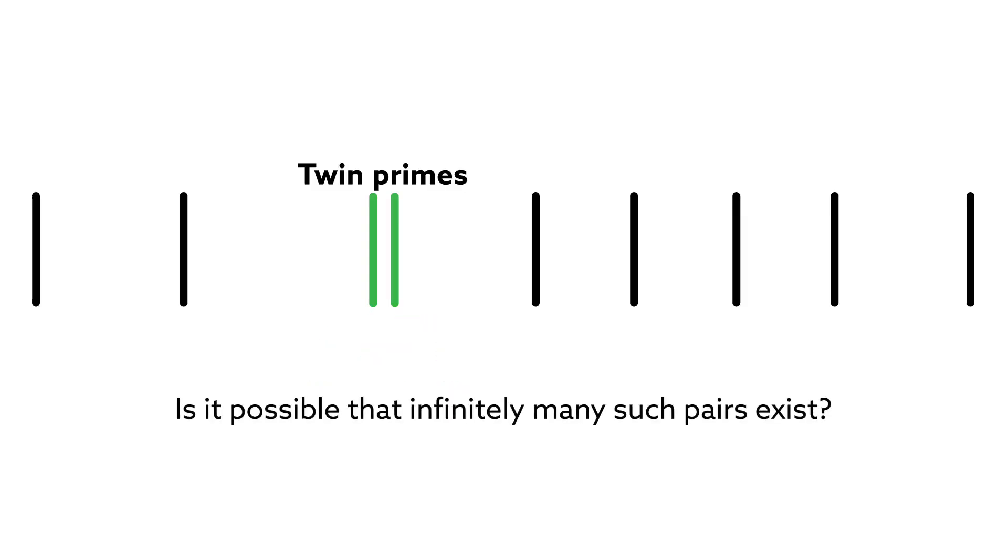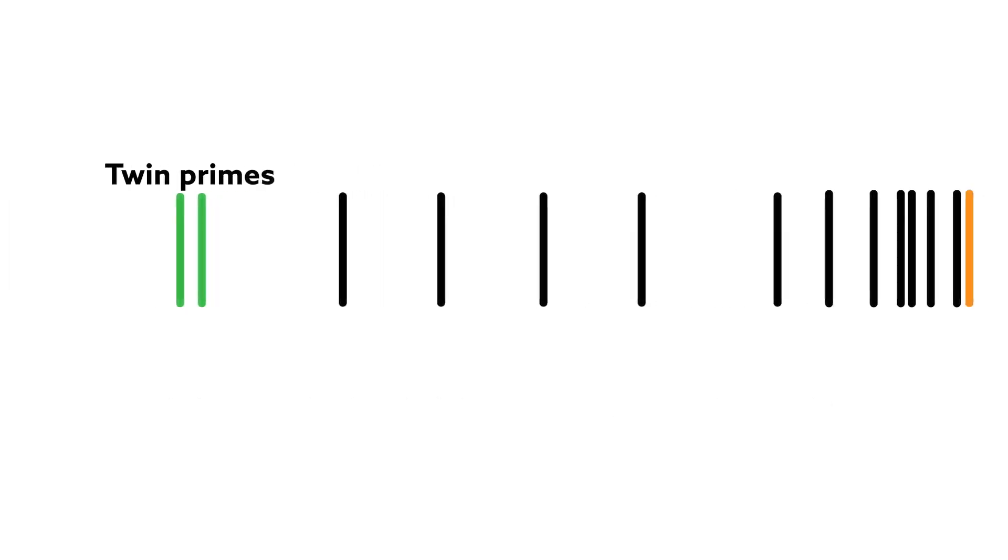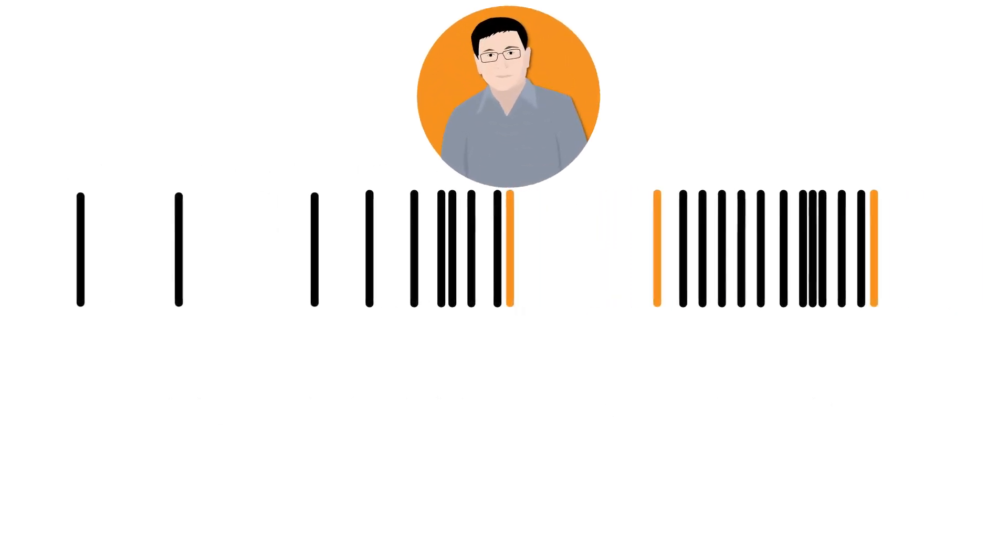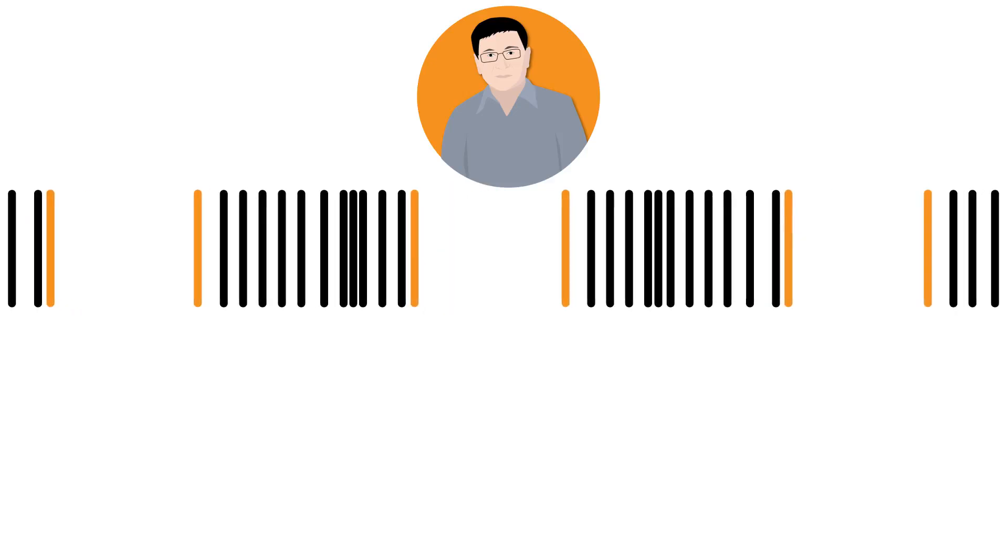So is it possible that infinitely many such pairs exist? While he didn't prove the case for twin primes, Yitang Zhang was the first to demonstrate that prime pairs separated by a finite distance, no more than 70 million, occur infinitely often. While far from the target distance of 2, the result was groundbreaking.